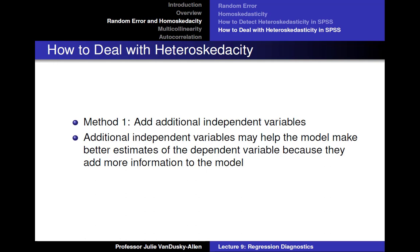If the errors are heteroscedastic, one way to deal with them is to add additional independent variables to your model. Additional independent variables may help the model make better estimates of the dependent variable because they add more information to the model. If the model makes better estimates, the variance of the error term might become more consistent across different types of observations.